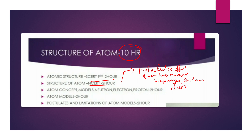Next comes electronic configuration, filling rules, Hund's rule, and the Pauli exclusion principle. From NCRT, you will learn the structure of the atom, including the postulates and limitations of atomic models. The main atomic models will be covered, and that is what you will learn from NCRT.